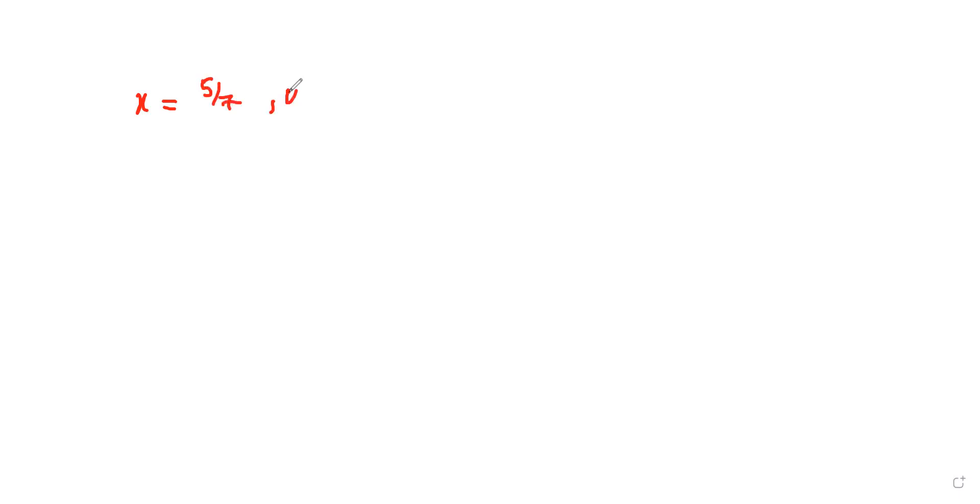In this video we are going to learn an example for absolute error as well as relative error. We are going to calculate a sum, giving an input of x = 5/7 and y = 1/3 for a calculator which is only using five-digit chopping.